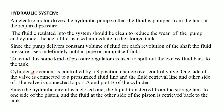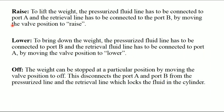The cylinder movement is controlled by a three-position changeover control valve. One side of the valve is connected to a pressurized fluid line and the fluid retrieval line, and the other side of the valve is connected to port A and port B of the cylinder. Since the hydraulic circuit is a closed one, the liquid transfers from the storage tank to one side of the piston and the fluid at the other side of the piston is retrieved back to the tank. These are the operations for rise, lower, and off.